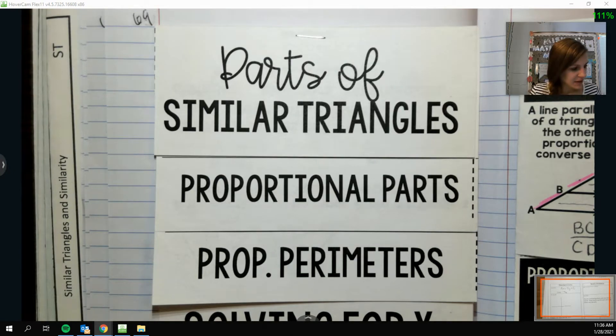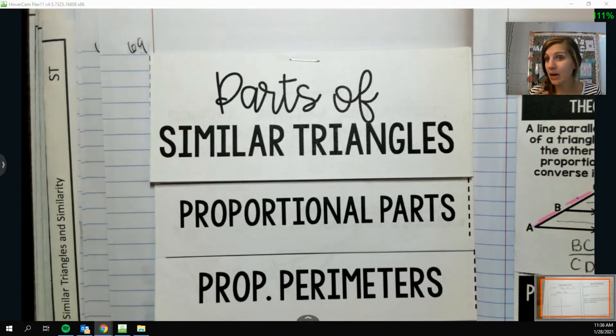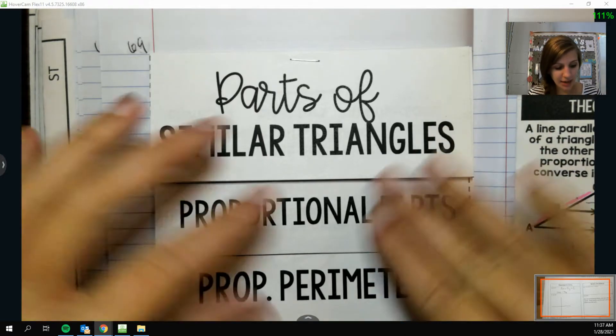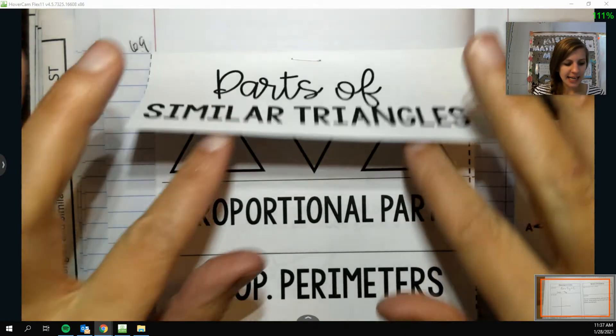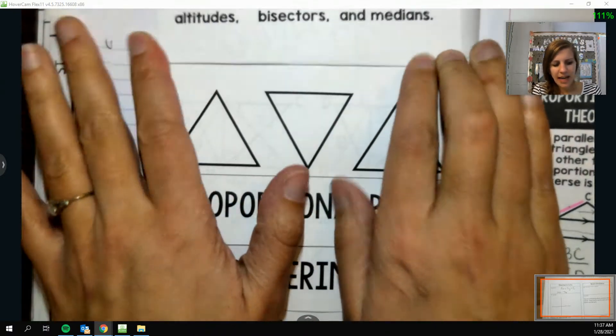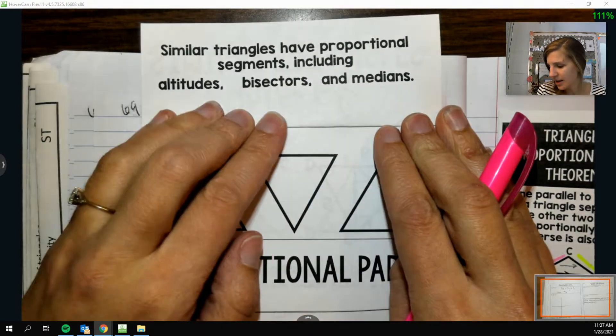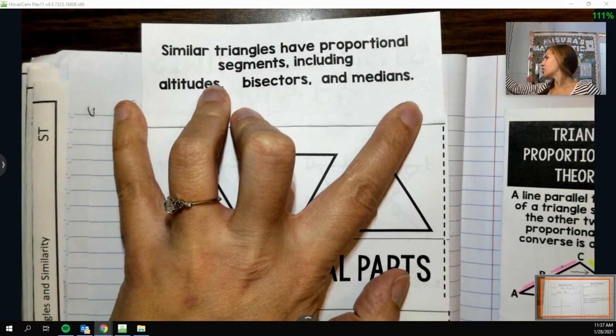So some other things that we can do when we're looking at triangles and thinking about how they're similar to each other in proportionality is in a triangle, when I have altitudes, bisectors, or medians, we can also get some proportionality.